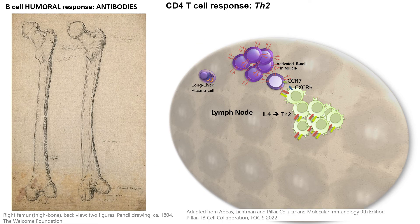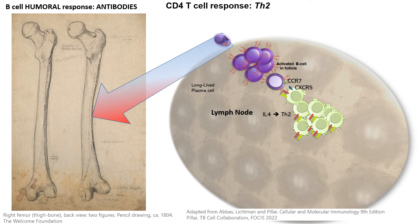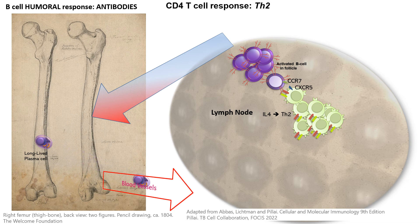In the process of B-cell differentiation during the humoral response, we can also create long-lived plasma cells. These cells reside in the bone marrow after traveling from the lymph node into circulation. Long-lived plasma cells are responsible for low-level antibody production. They circulate between the blood vessels and the bone marrow, continuously producing antibodies so that when we encounter the danger signal again, there is already a level of antibody present to help.